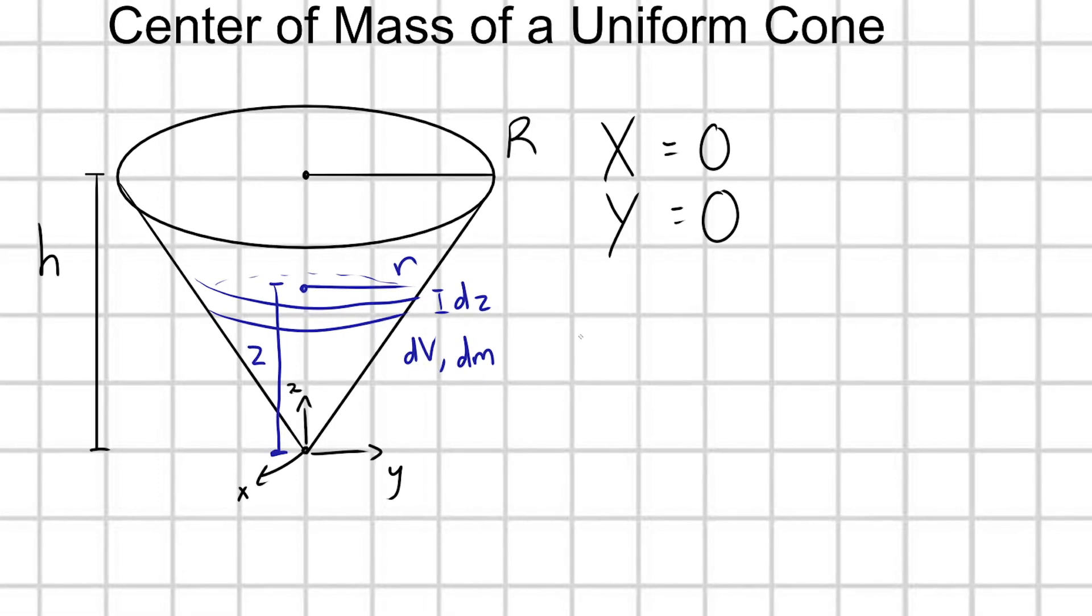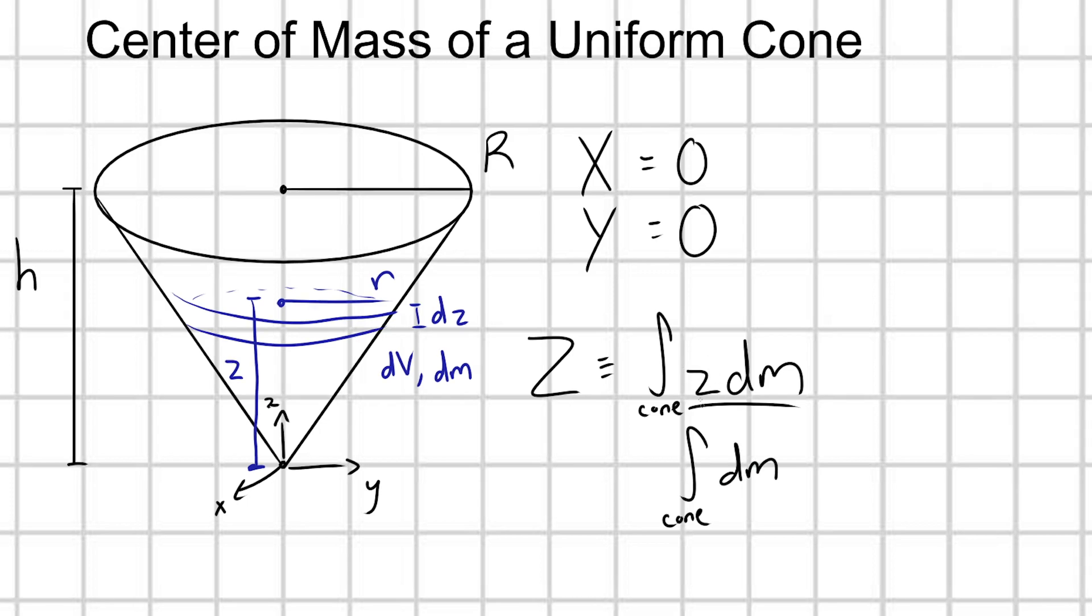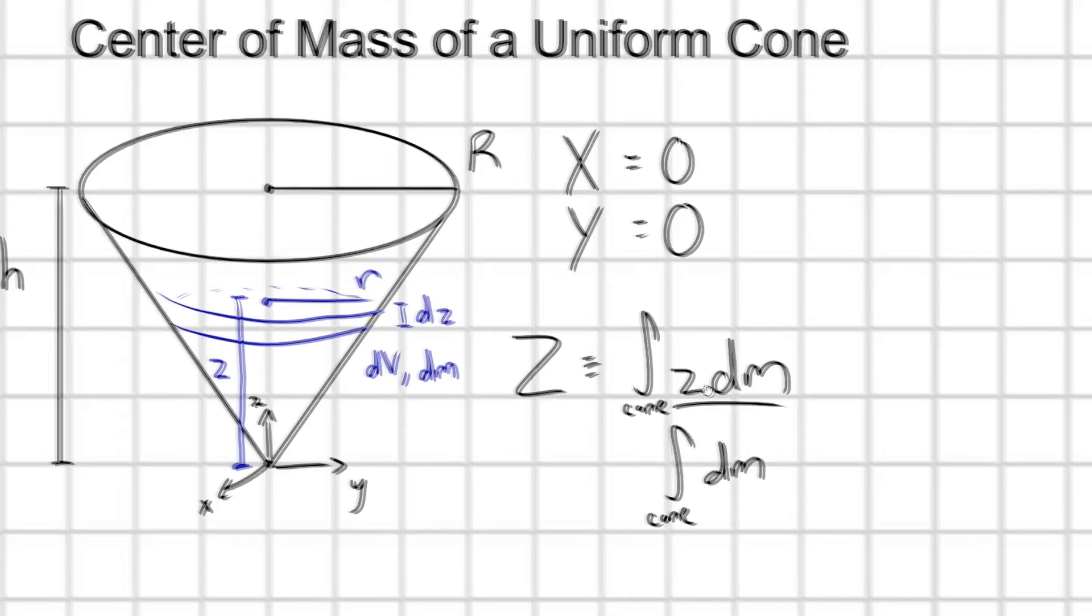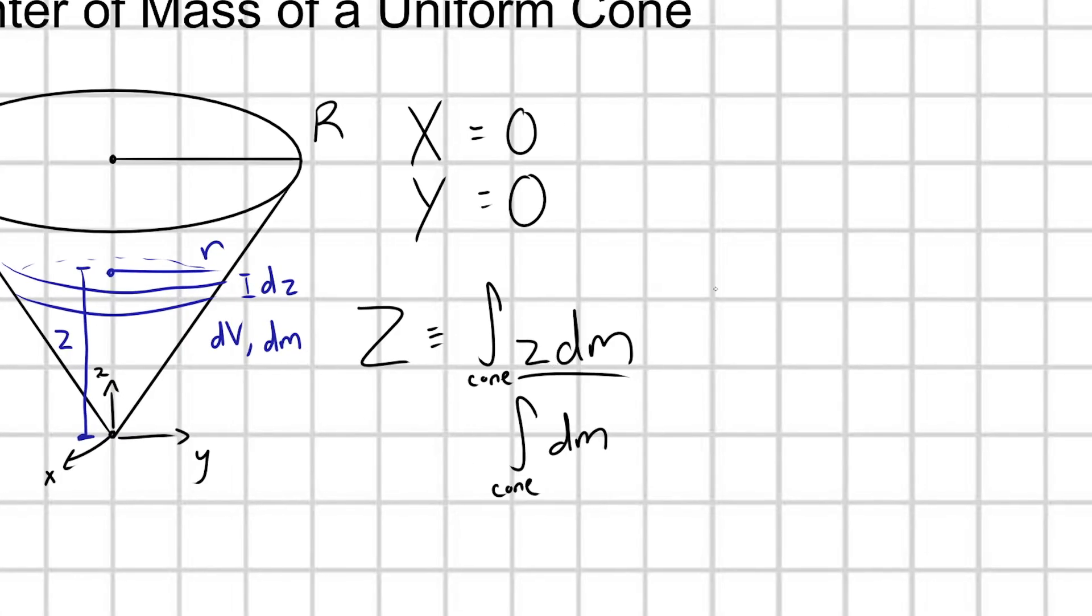With this notation, the center of mass capital Z of this cone is defined as the integral over my cone of z dm divided by integral over my cone of dm. And we can almost immediately simplify this down because this is a uniform cone.